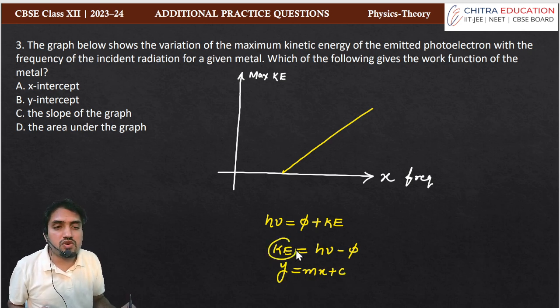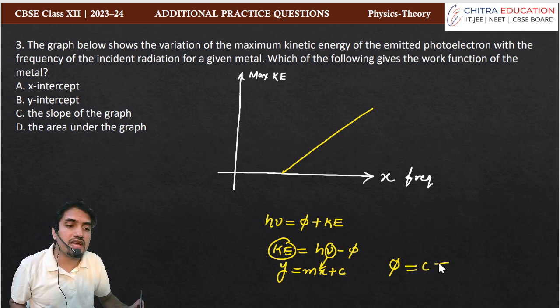then kinetic energy we have on y-axis, frequency we have on x-axis, and φ, which is constant c, that is the intercept on y-axis.